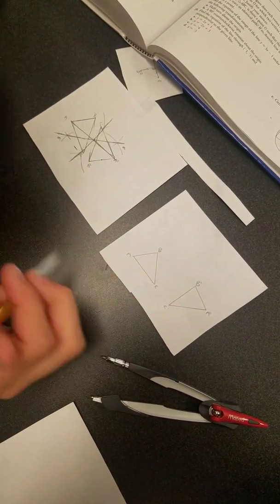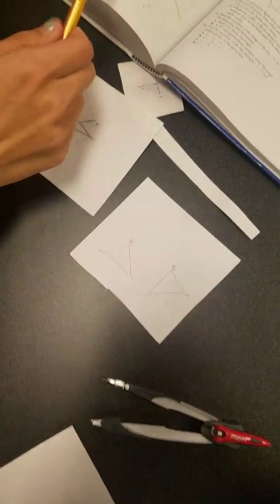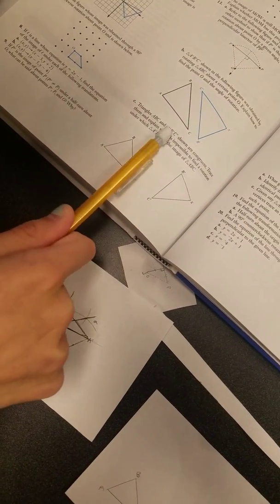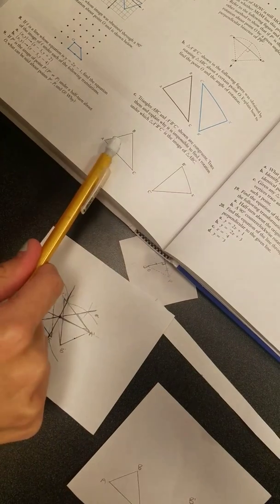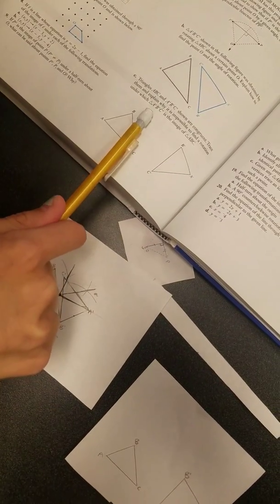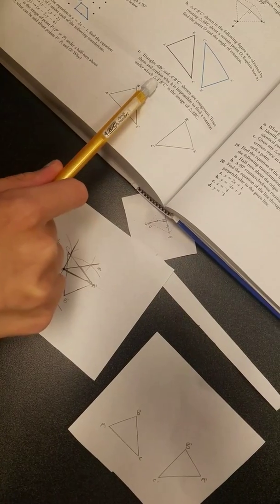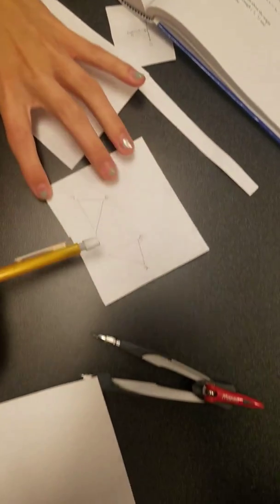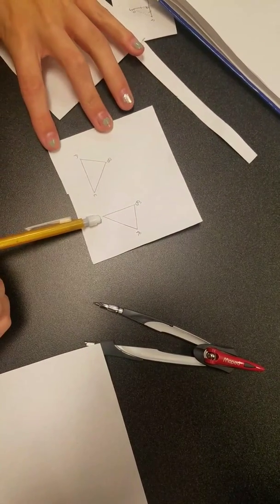And now for part C we have triangles ABC and A prime B prime C prime and we know that they are congruent. Trace them and explain why it is impossible to find a rotation under which triangle A prime B prime C prime is the image of triangle ABC. So I traced it for us over here already.